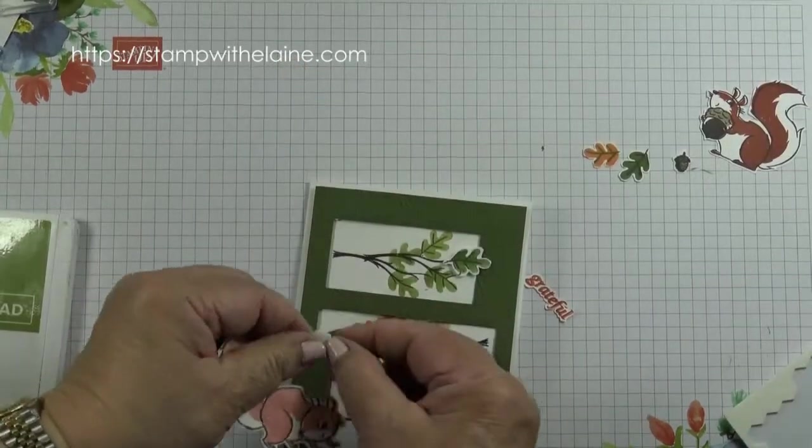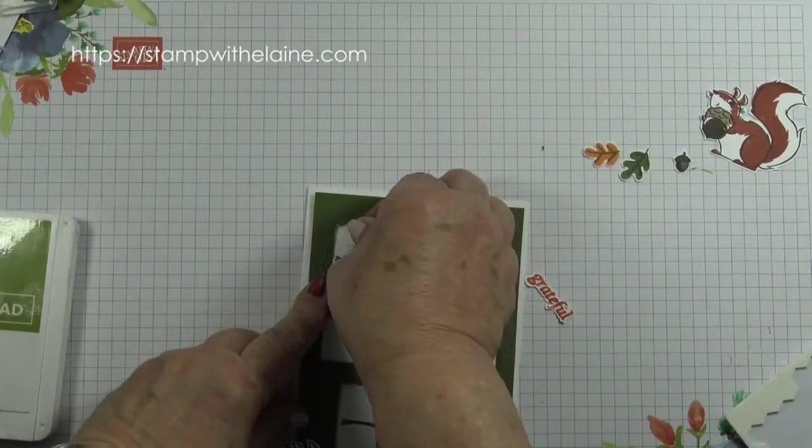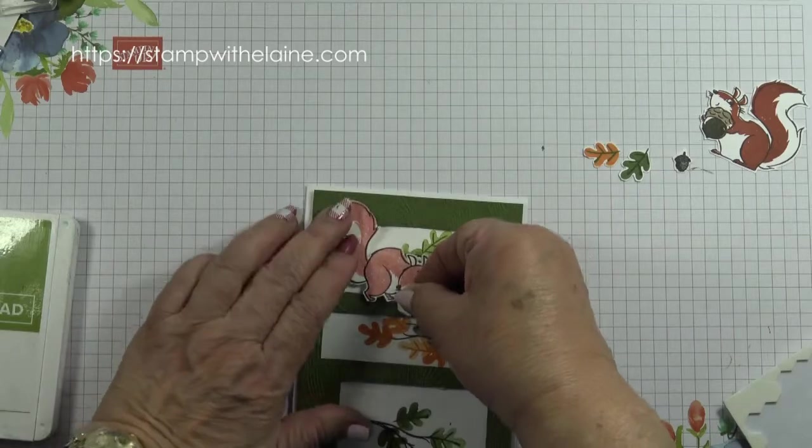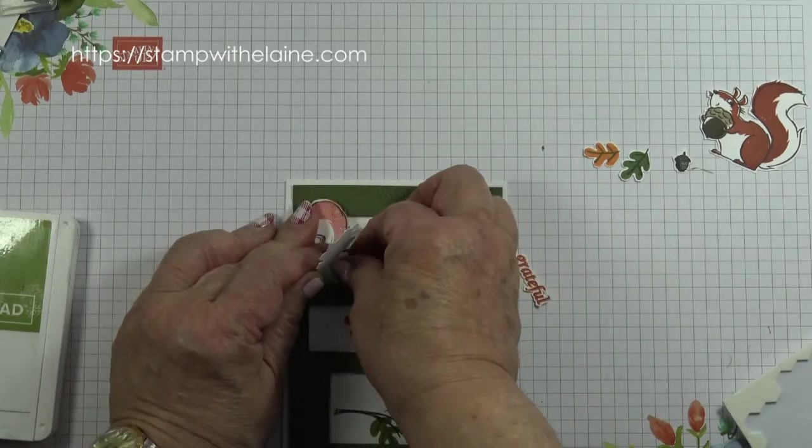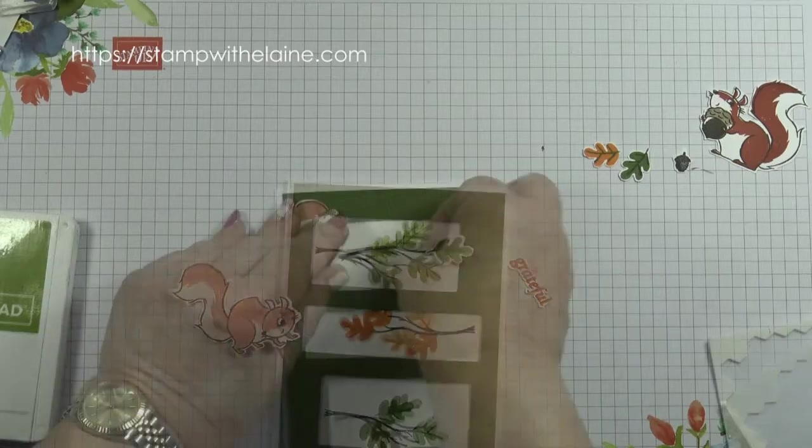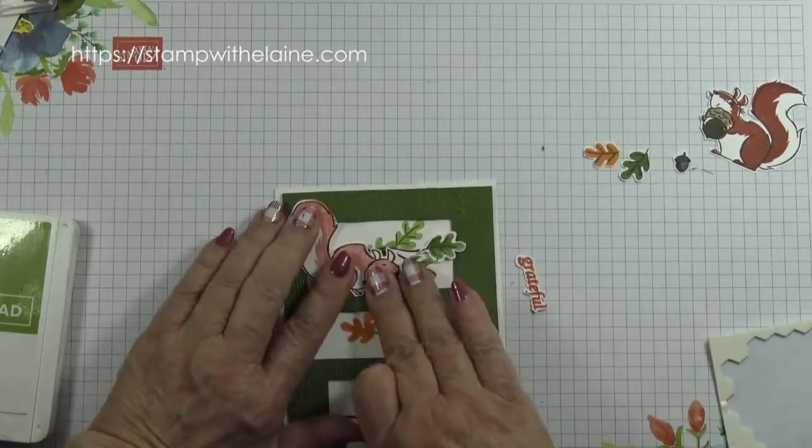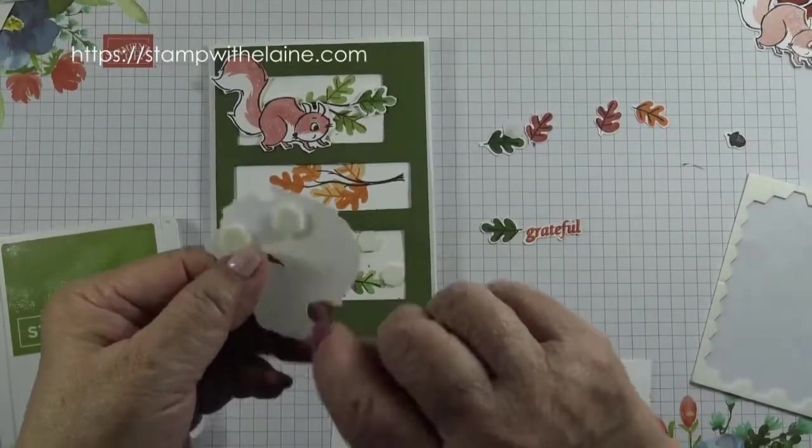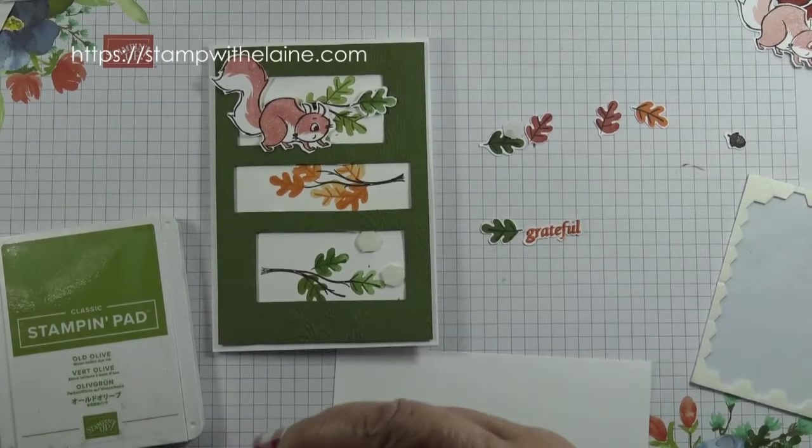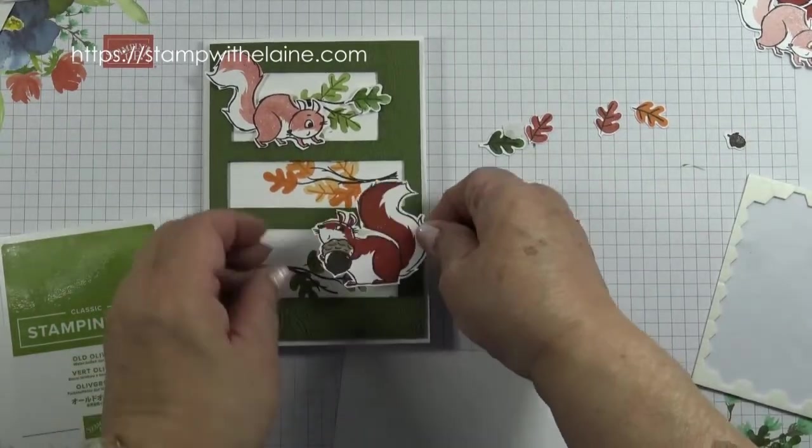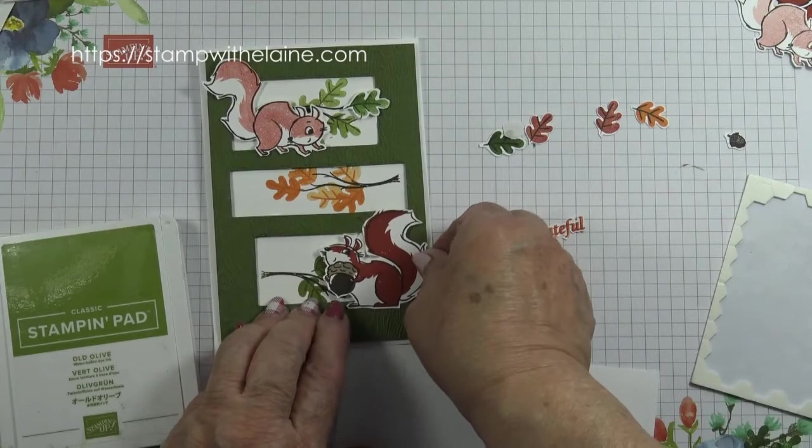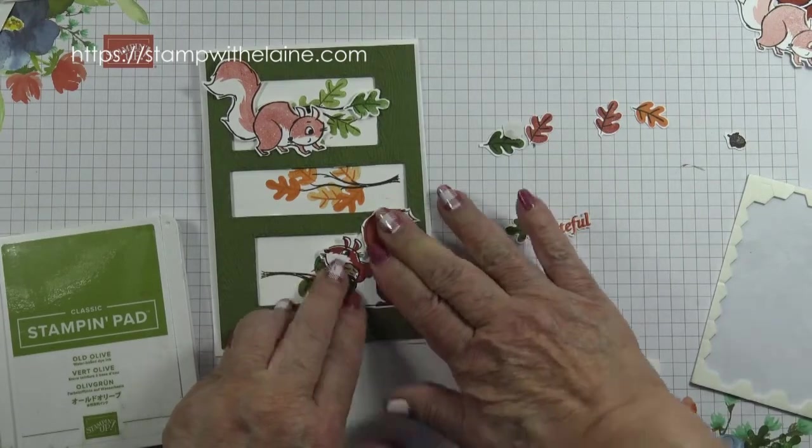So I'm going to pop a dimensional on here for his tail. See where that goes. Now I've put dimensionals on the back. Remove the backing paper and pop in along there.